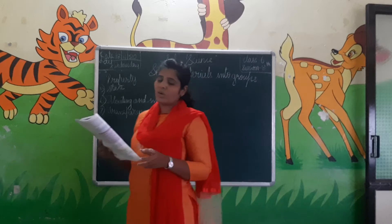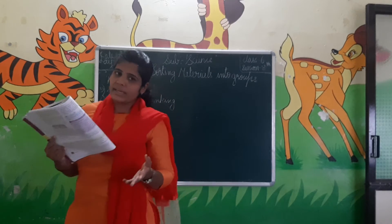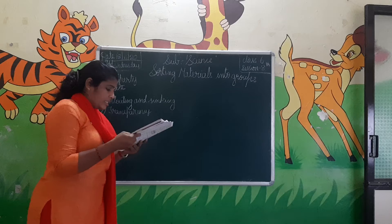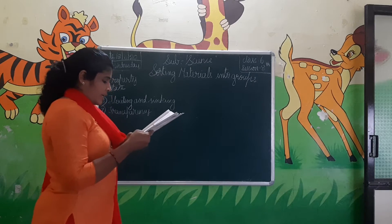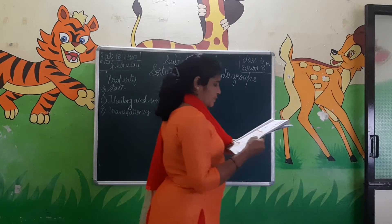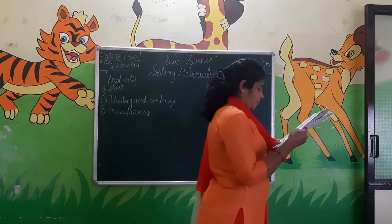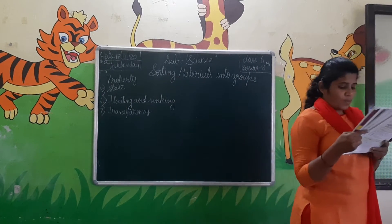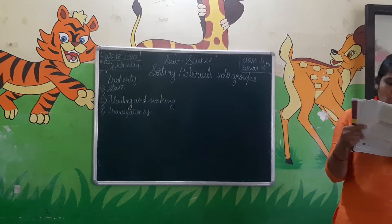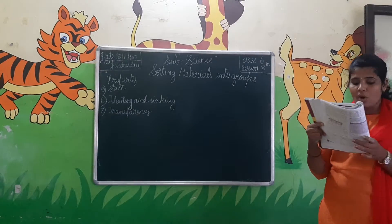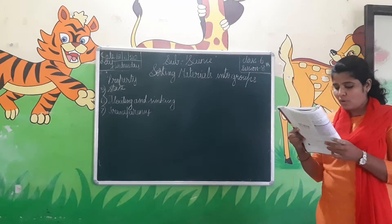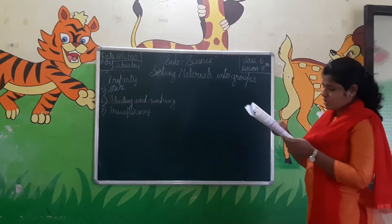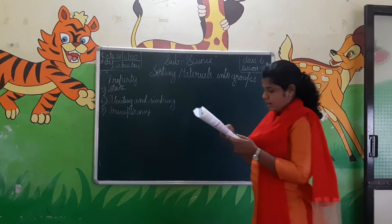The materials through which we can see objects clearly are called transparent materials, and this property is called transparency. Glass is a transparent material. Some other examples of transparent materials are water, alcohol, and cellophane paper. Some kinds of plastic bottles are also transparent.